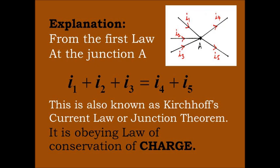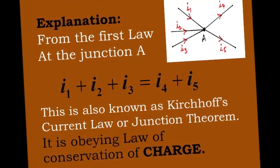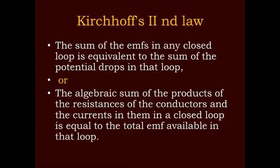Explanation: From the diagram, at junction A, the currents coming into the junction are I1, I2, and I3, and the currents leaving the junction are I4 and I5. Therefore, I1 + I2 + I3 = I4 + I5. This is known as Kirchhoff's current law or the junction theorem. It obeys the law of conservation of charge.